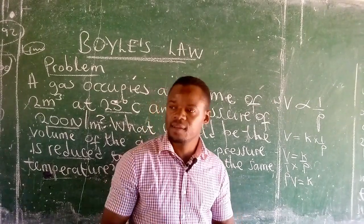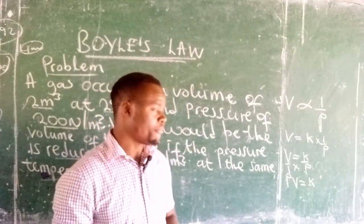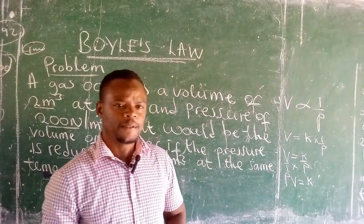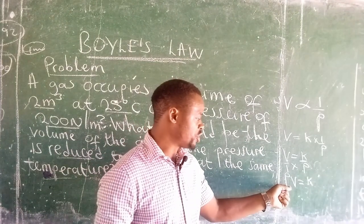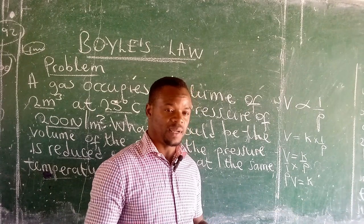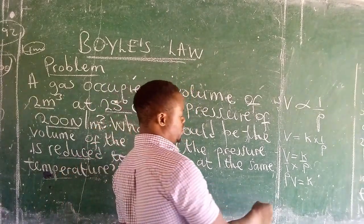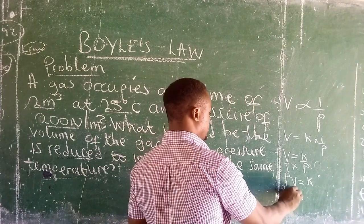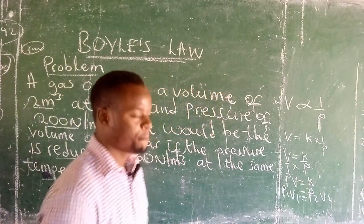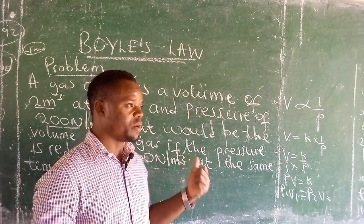What is kept constant under Boyle's Law is temperature. So given pressure one and volume one, and pressure two and volume two, the equation you use is p1v1 is equal to p2v2. With that in place, we can now look at the problem.